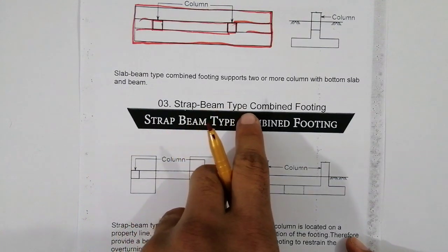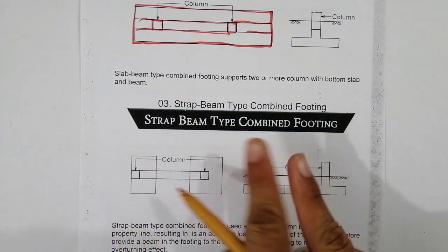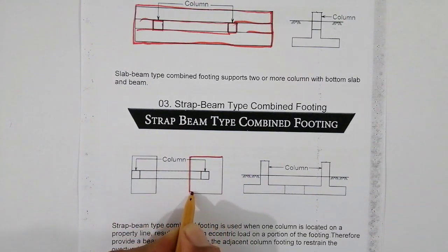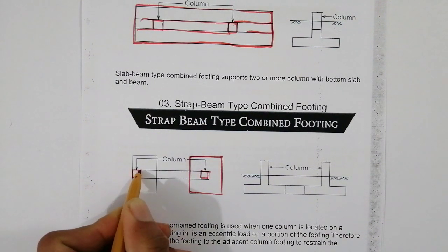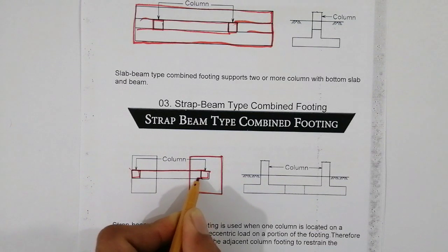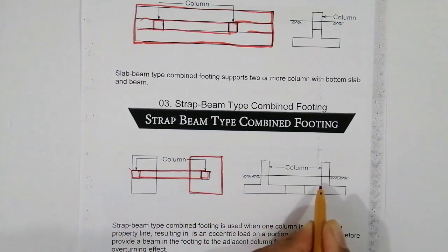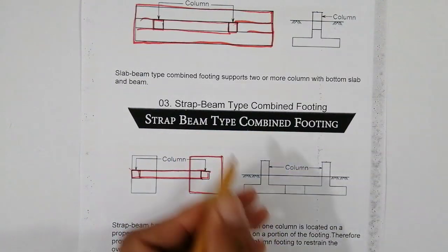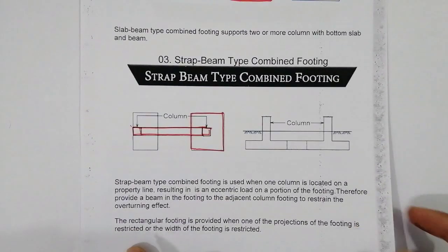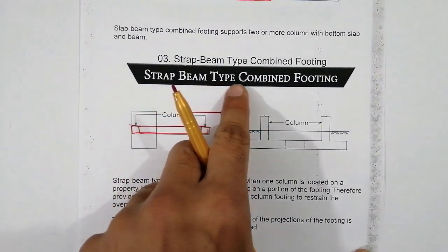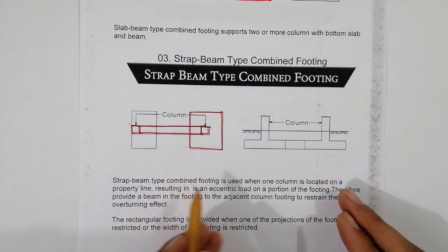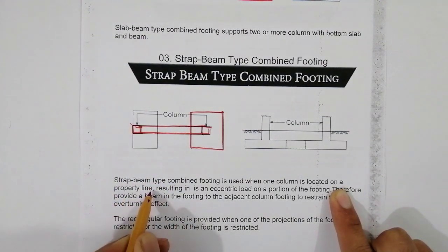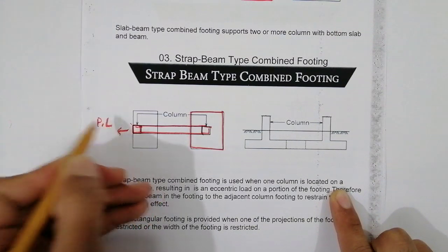The third type is the strip beam type combined footing. As you can see, one column is at the property line, so the footing becomes a strip beam along the columns. This is the section, the elevation, and the top view. Strip beam type combined footing is used when one column is located on a property line, shown here as PL.